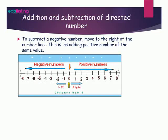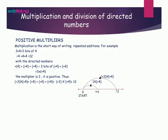To subtract a negative number, move to the right of the number line, which is equivalent to adding a positive number of the same value. Now, let's move on to multiplication and division of directed numbers.